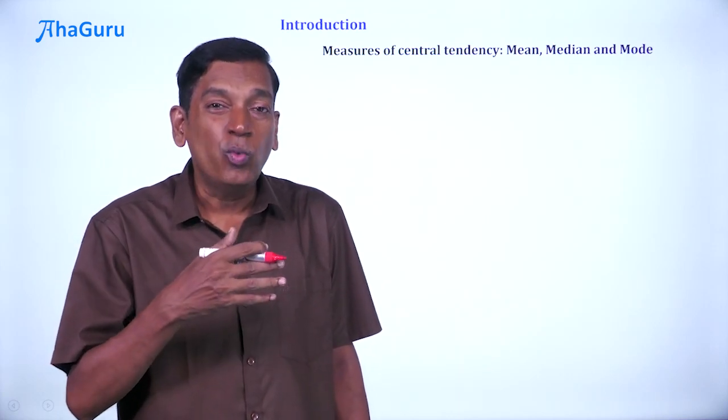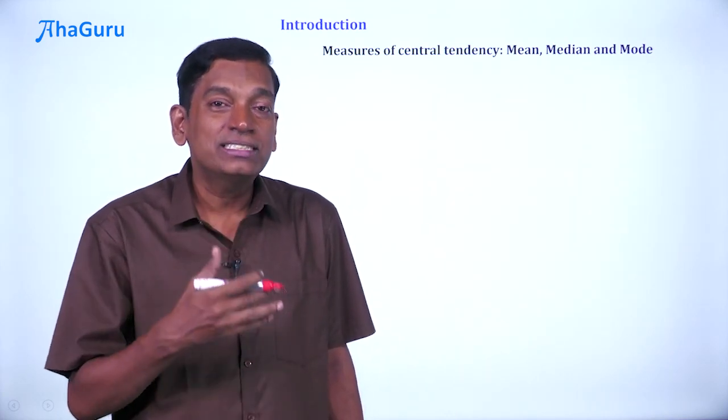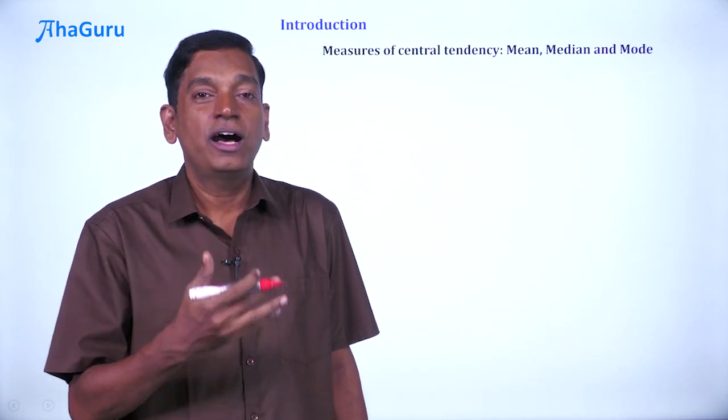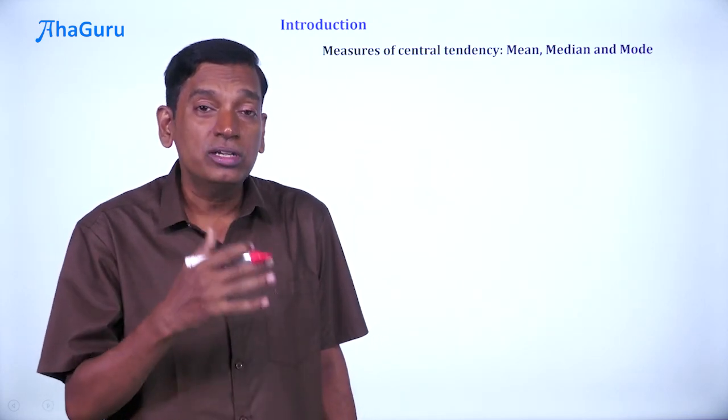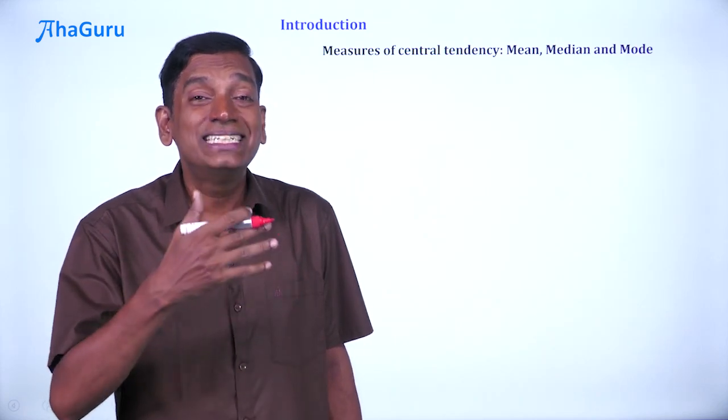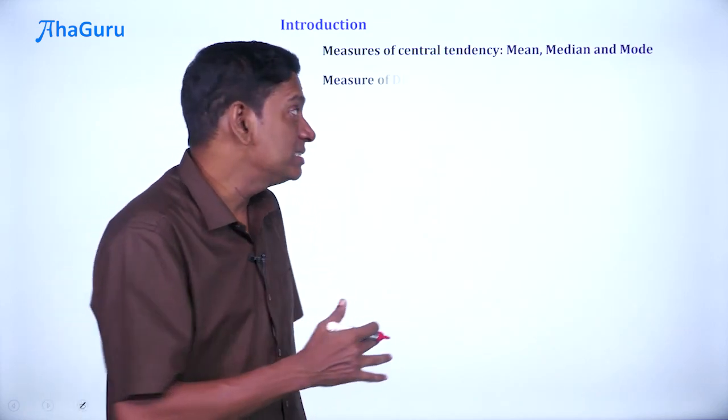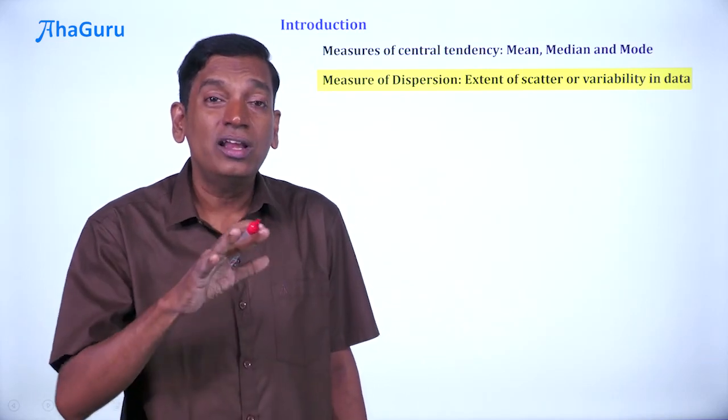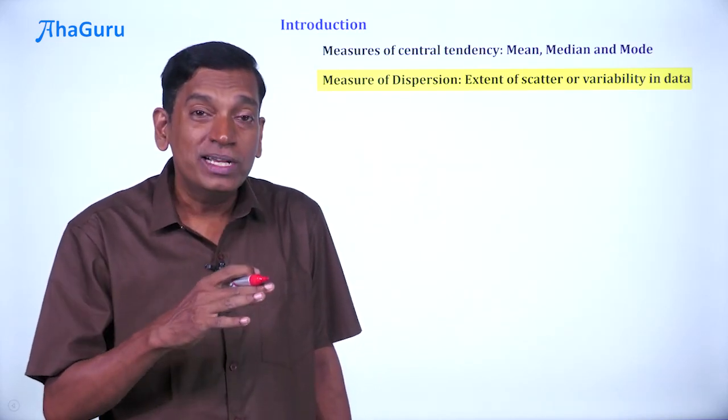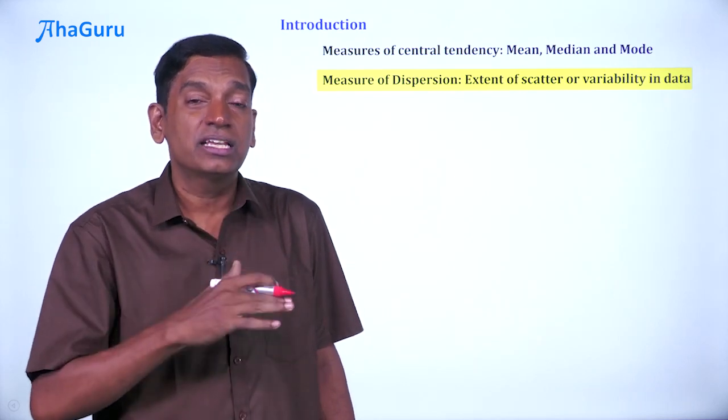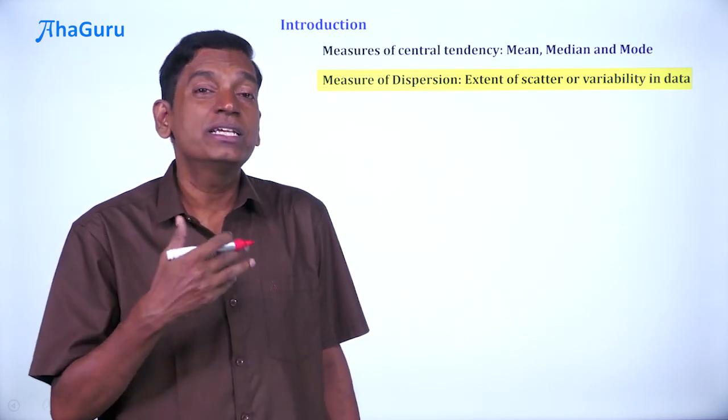But this is only one aspect to understand a set of observations or data. Another important idea is what is known as a measure of dispersion, and that is the extent of scatter or variability in the data—how much things are away from each other. So how do we measure this?